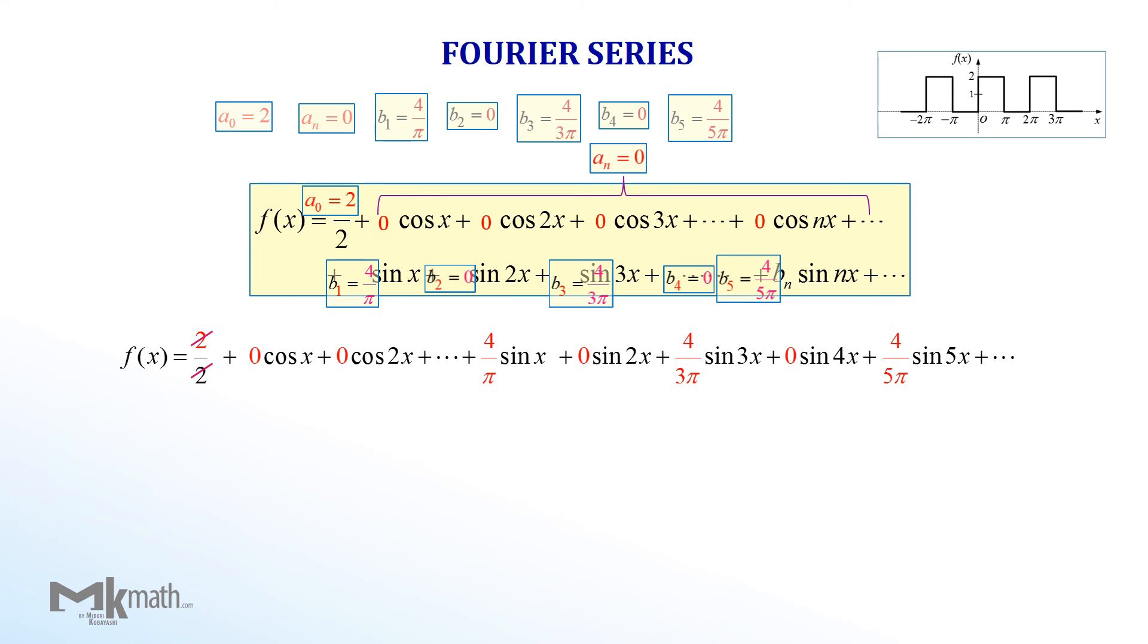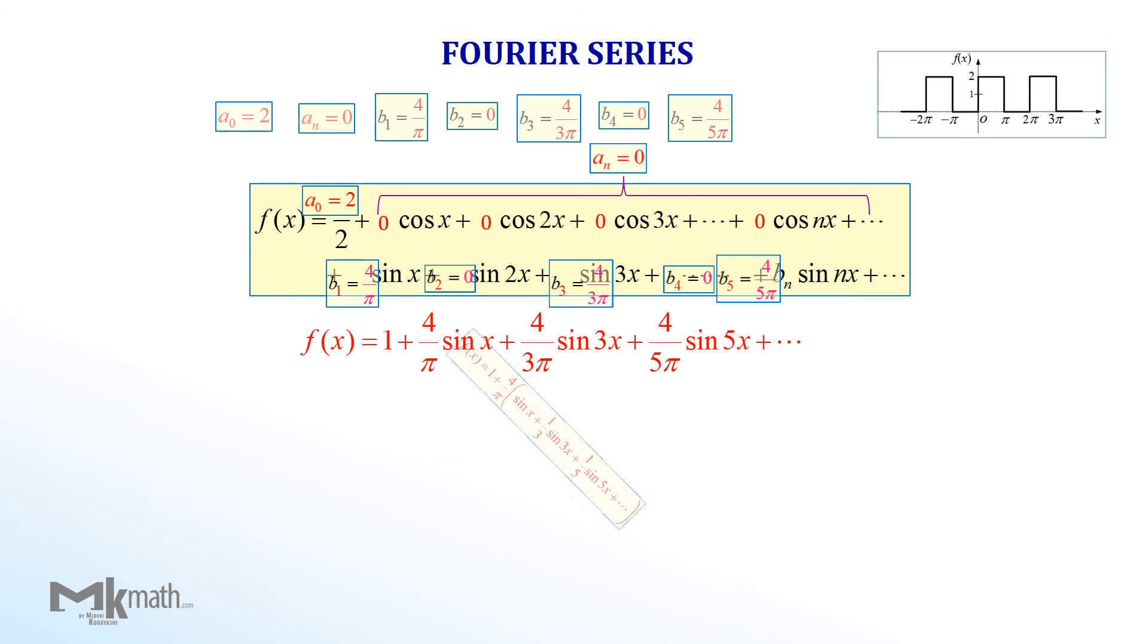Our final series then, f of x equal 1 plus 4 over pi sin x plus 4 over 3 pi sin 3x plus 4 over 5 pi sin 5x plus and so on. Taking the common factor 4 over pi from the second term to get f of x equal 1 plus 4 over pi bracket sin x plus 1 third sin 3x plus 1 fifth sin 5x plus and so on. This series represents the wave above.